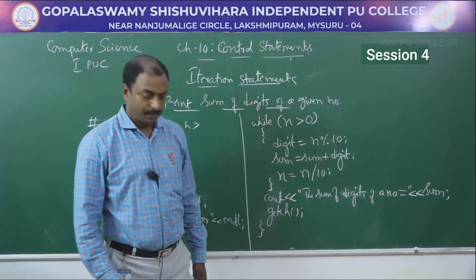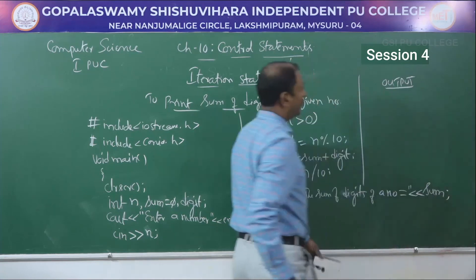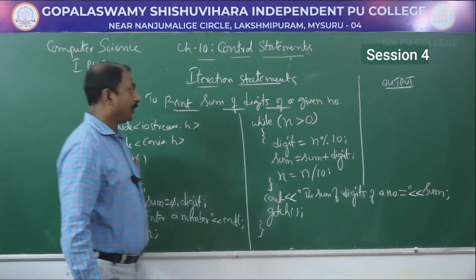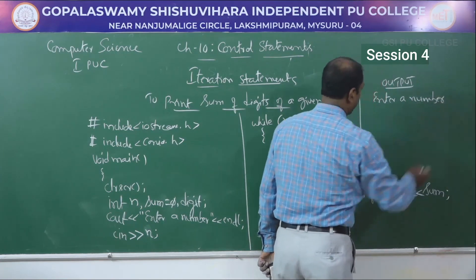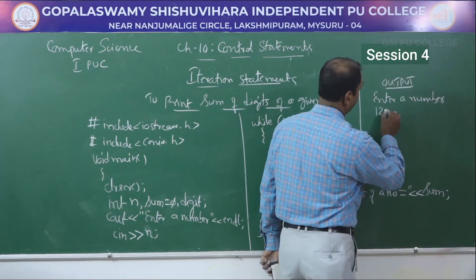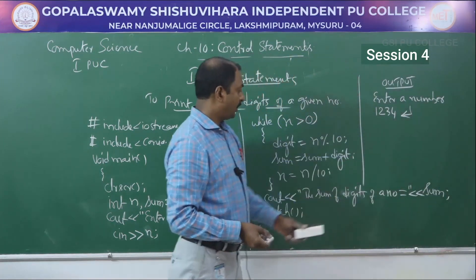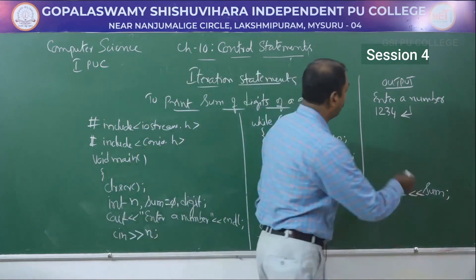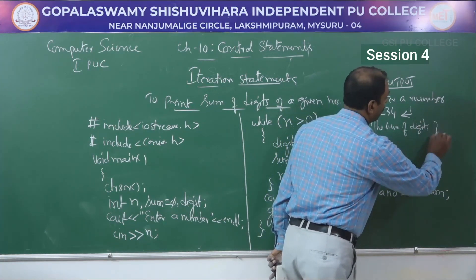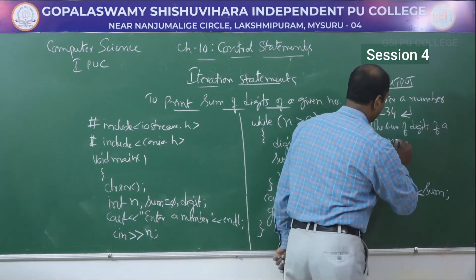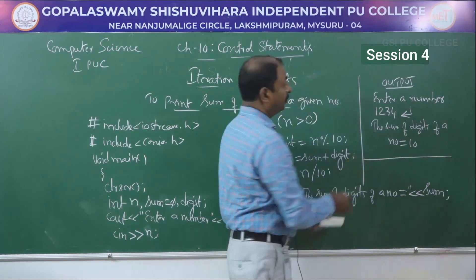The output of the program: first a message "Enter A Number" is displayed. We enter 1234 and press Enter. The output shows: Sum Of Digits Of A Number = 10.